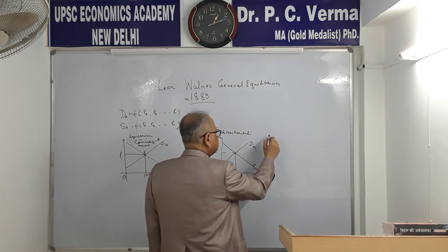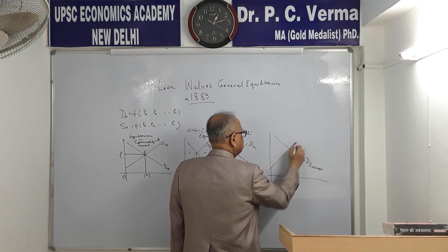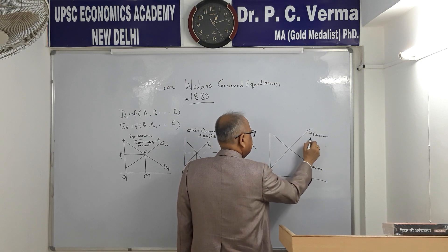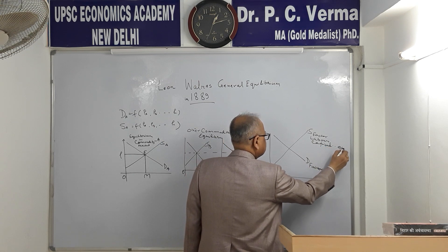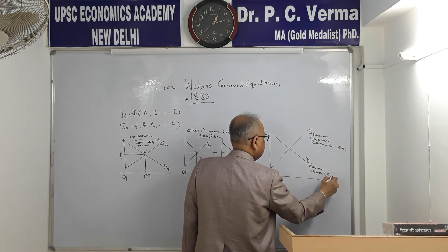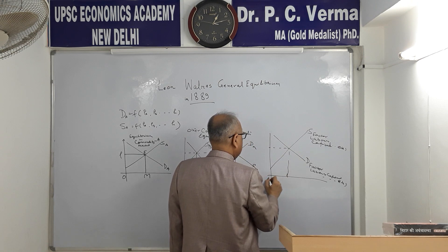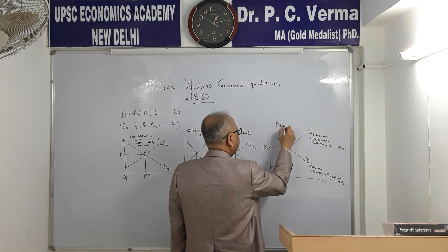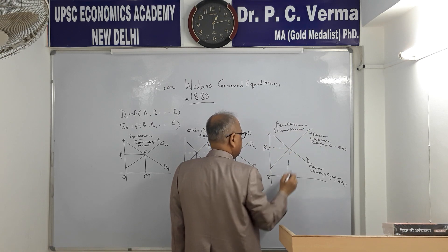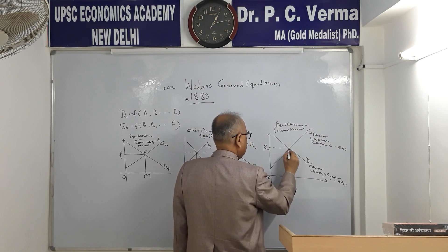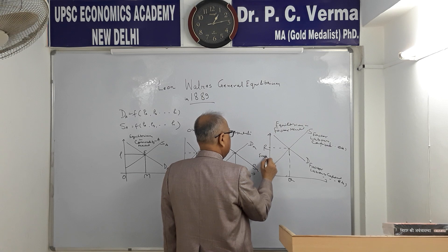At the same time, demand for factor and supply of factor must also be in equilibrium. What is a factor? Labor, capital, etc. Equilibrium in the factor market gives us the factor price, also called factor reward.